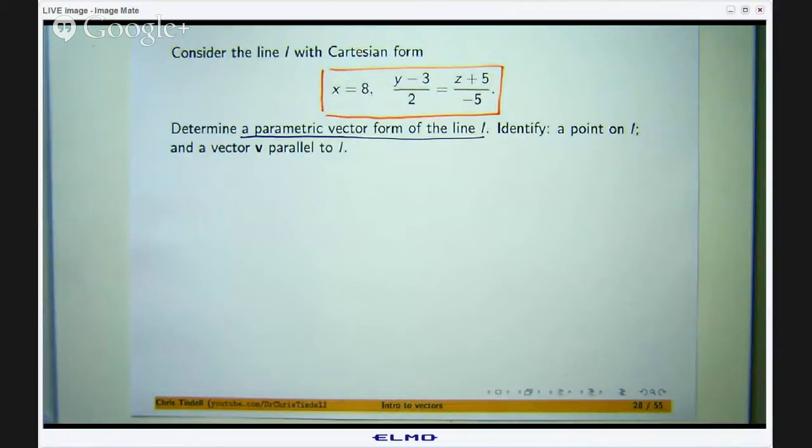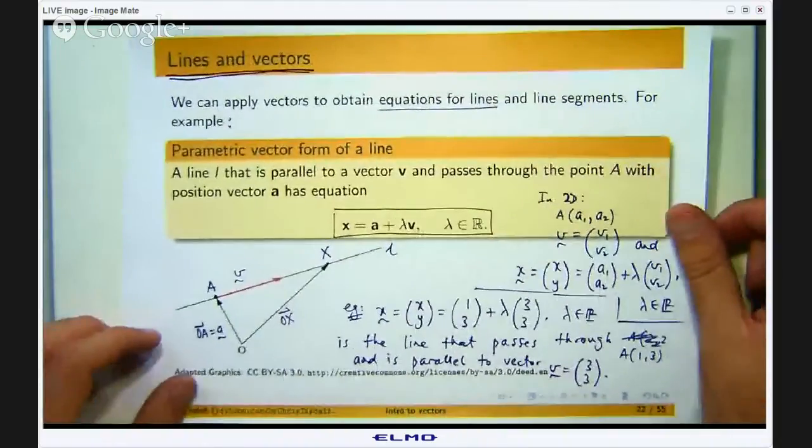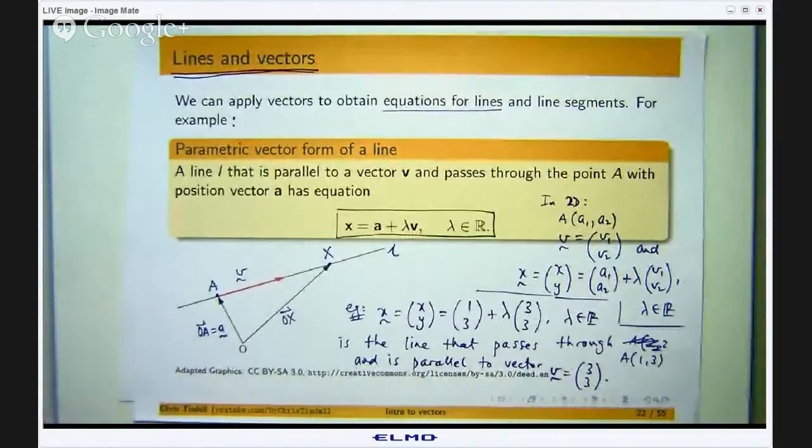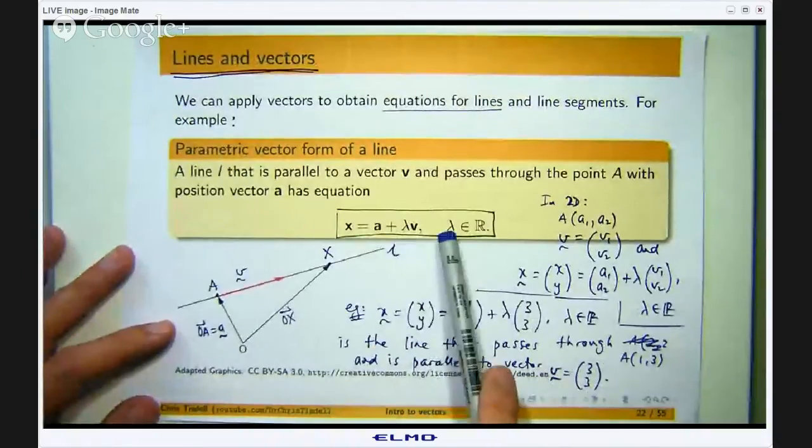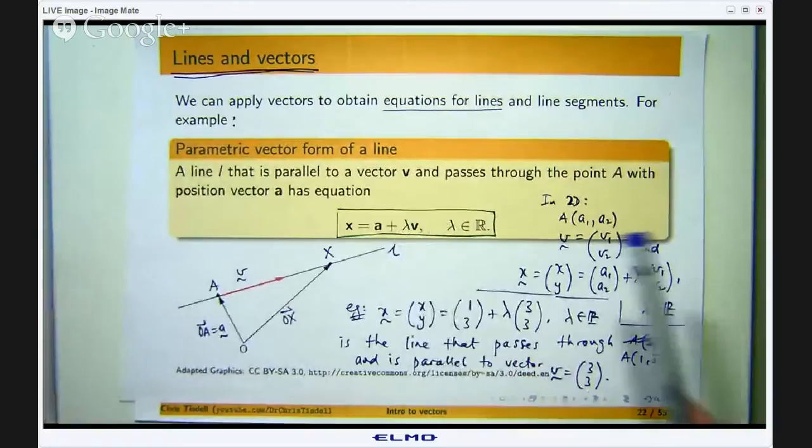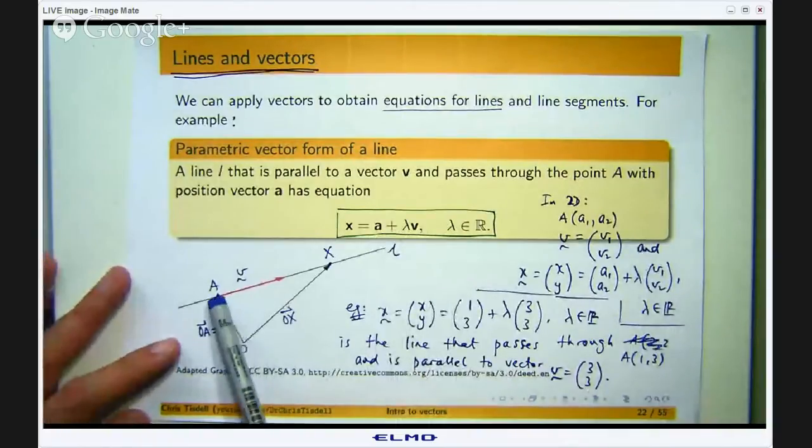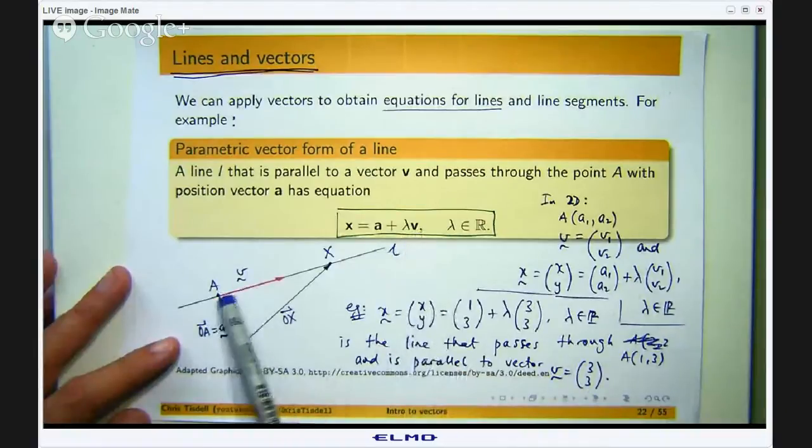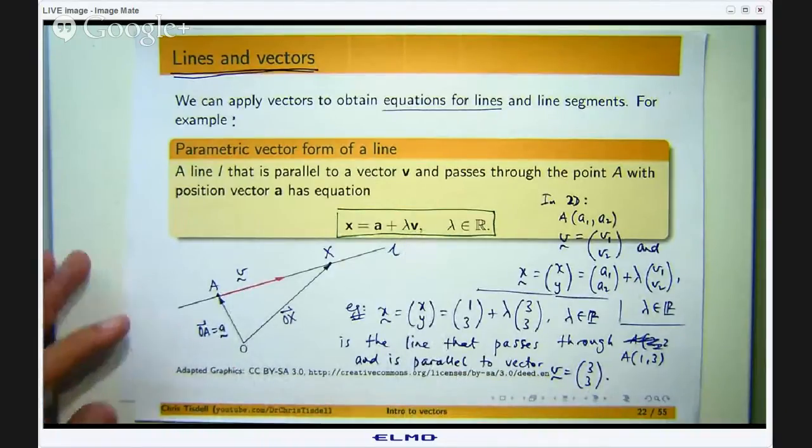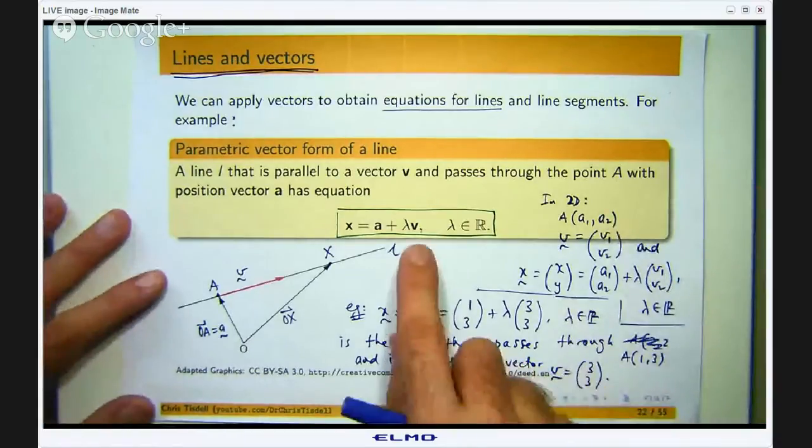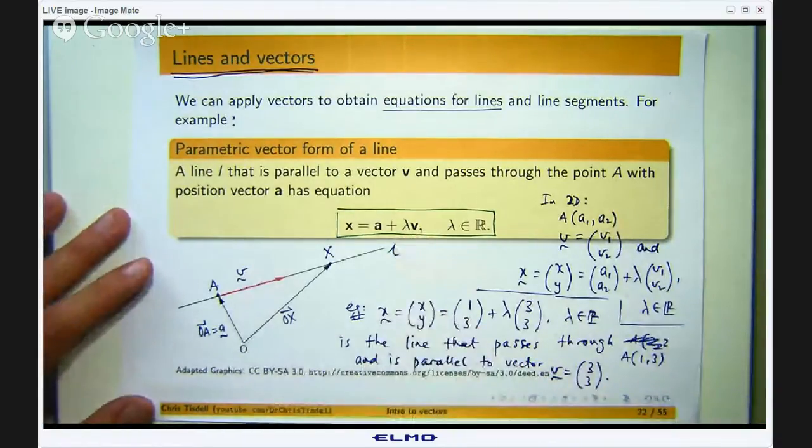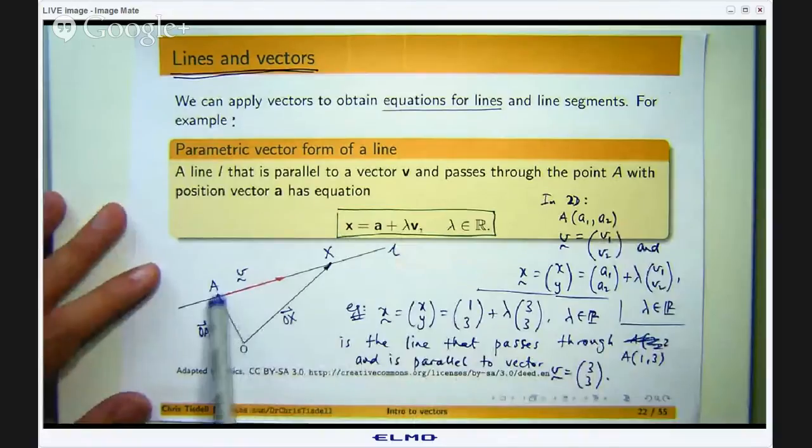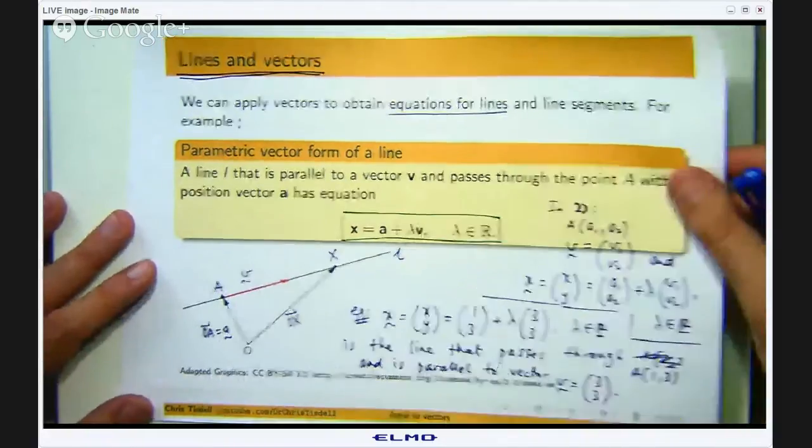So let us just refresh our memory on what a parametric vector form of a line is. So this is the form, λ here varies over the real numbers. It is called a parameter. A is the position vector of a point on the line and V is a vector that is parallel to the line. So to move to a parametric vector form all I really need is a point on the line and a vector that is parallel to the line.